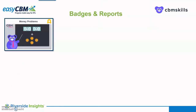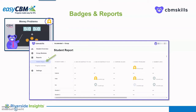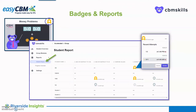Once the student exits the module, any badge earned will display at the top right corner of the module. Within the teacher login, selecting Reports and then Student Report displays each student's badge earned by skill and any modules the student attempted to complete. Click any of the badges to view the student's tries to complete the module. To review the questions the student answered within the module, select the attempt and then the review icon. Each question and the student's response will appear, and for any question answered incorrectly, the correct answer will appear.